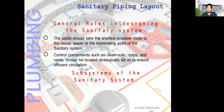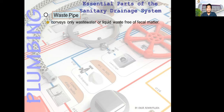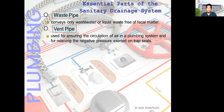The subsystems of the sanitary system are the waste collection system and the ventilation system. The essential parts of the sanitary drainage system include: first, the waste pipe, which conveys only wastewater or liquid waste free from fecal matter. Second, the vent pipe, used for ensuring the circulation of air in a plumbing system and for relieving the negative pressure exerted on the trap seal, ensuring air circulation in your pipelines is maintained.